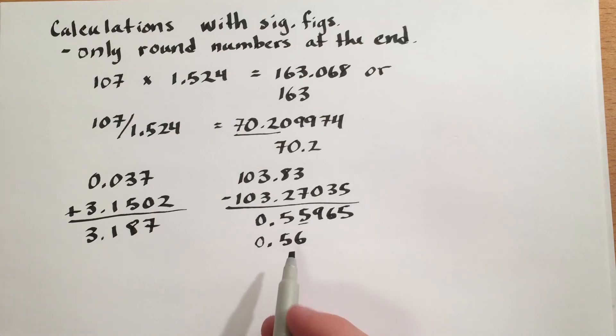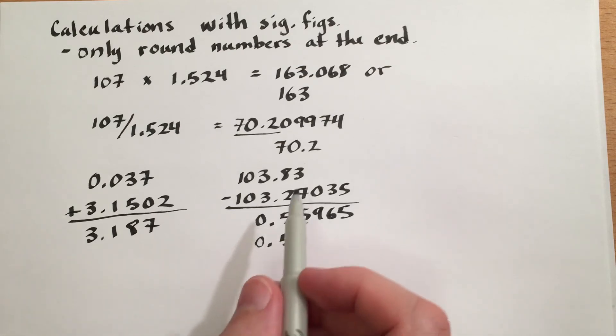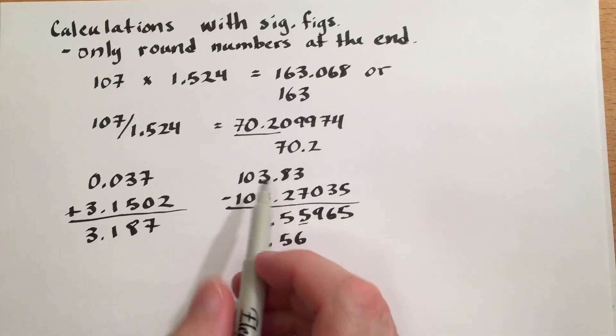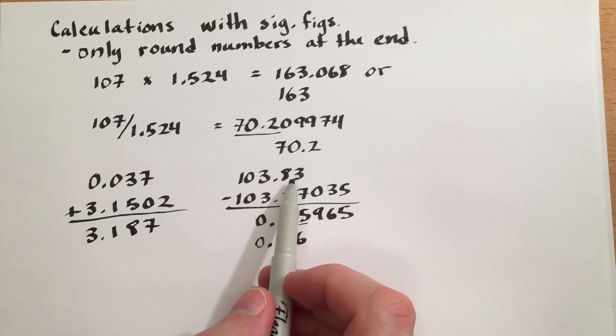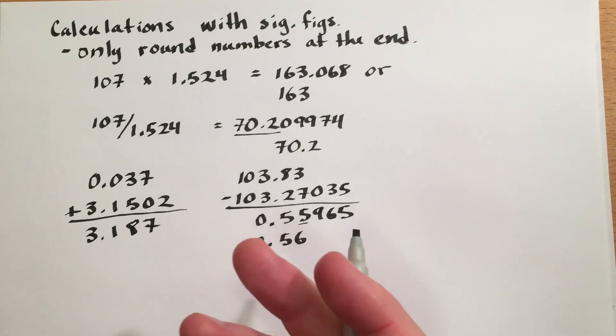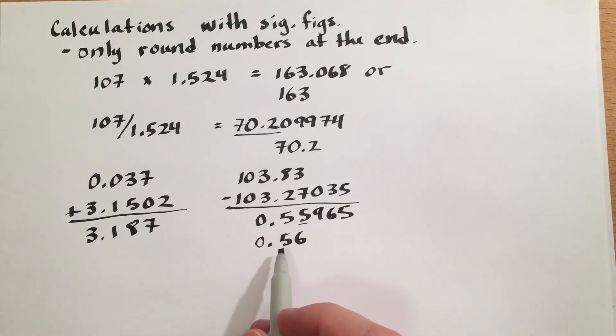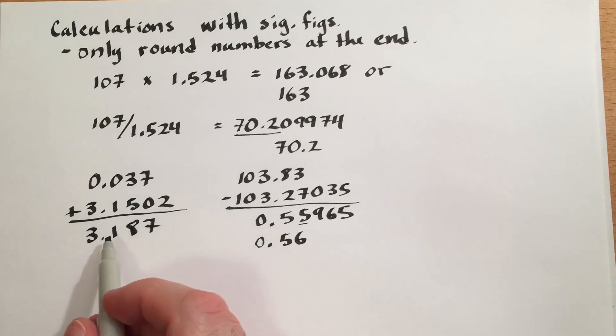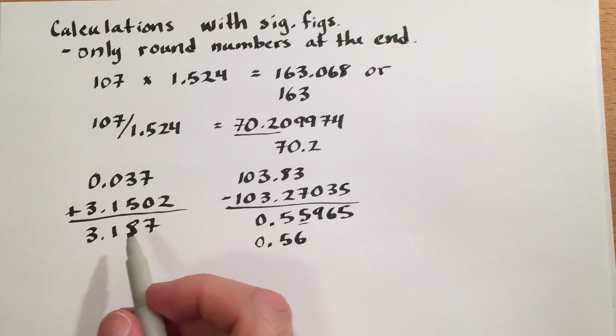Now you may notice that we have lost a significant number of digits in our answer. We started with 5 here and many more there. However, subtraction often loses a significant digit or more in the calculation, whereas addition may increase the number of significant figures overall.